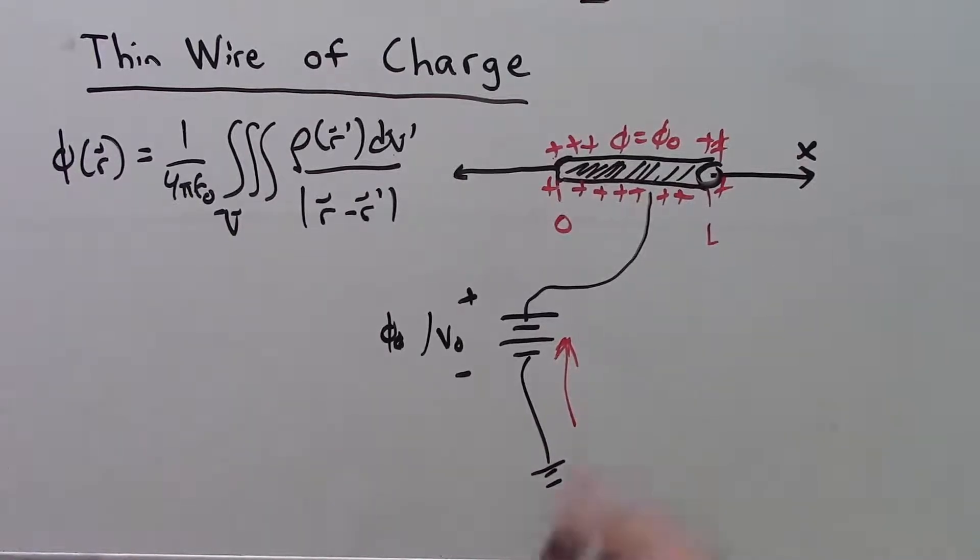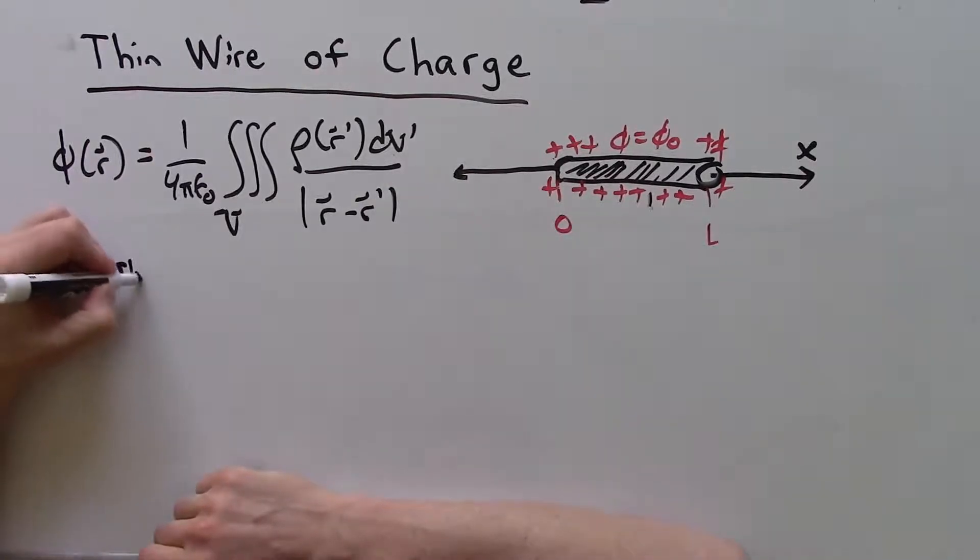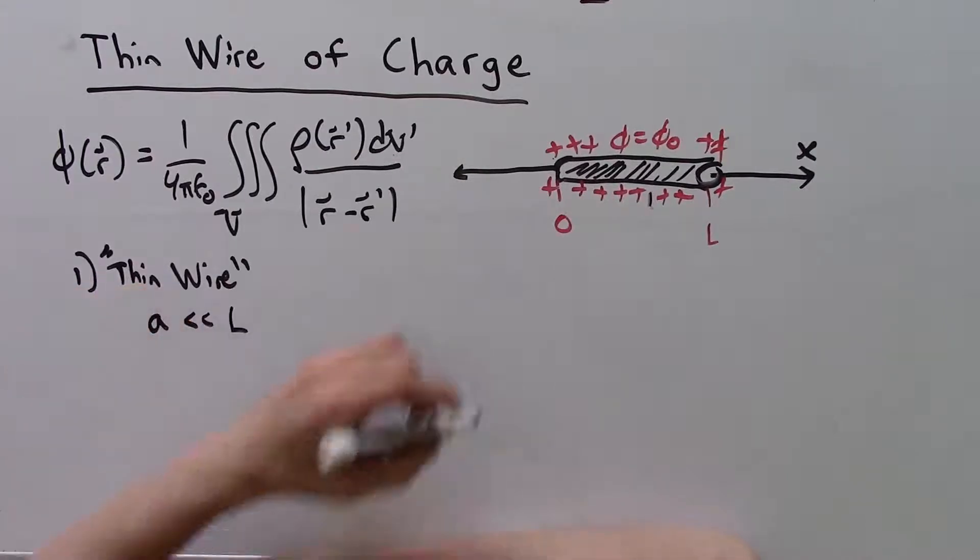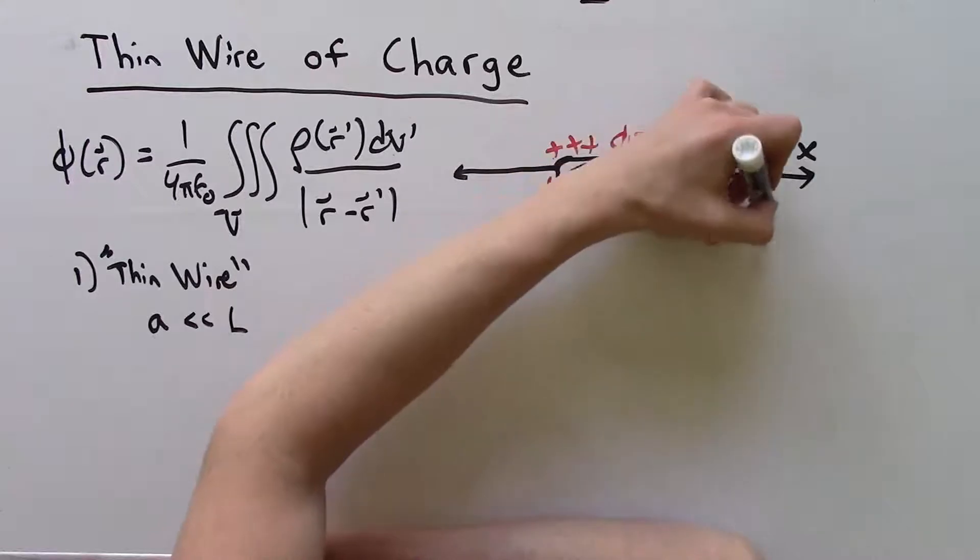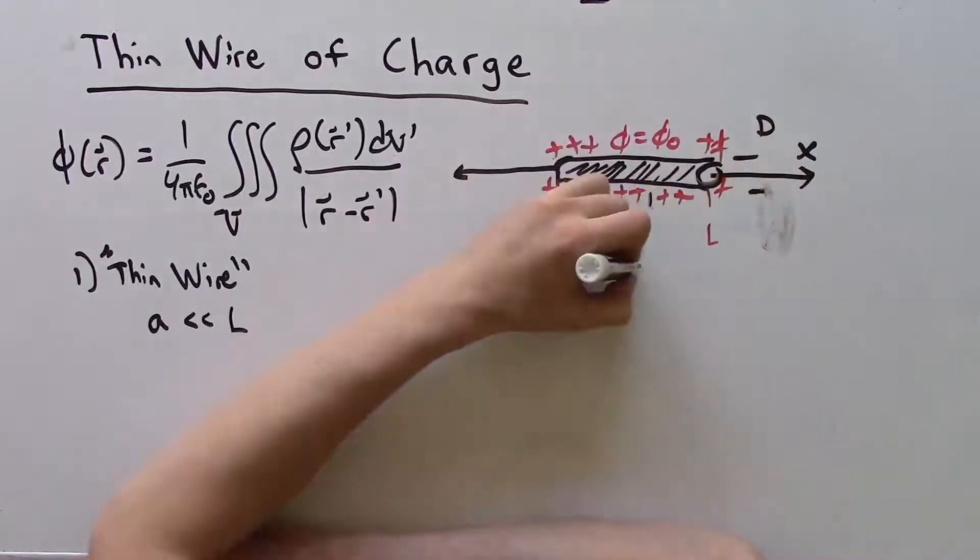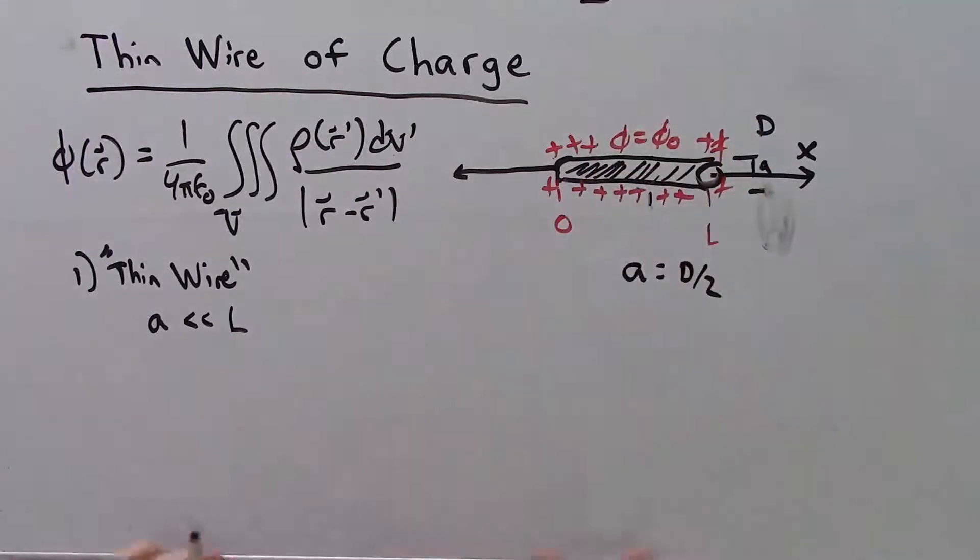The first step is we need to simplify the model a little bit. We could do a full three-dimensional analysis, but for introductory purposes, it makes more sense to break this down. One of our first assumptions is the thin wire assumption, which means the radius is much smaller than the length. The distance from there to there is my A, so if it's thin, it's very long and thin.